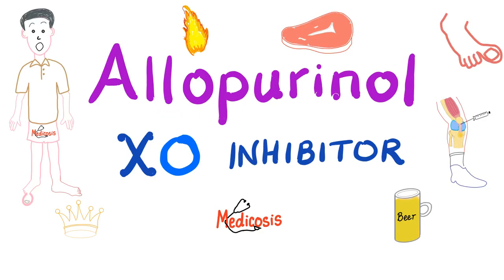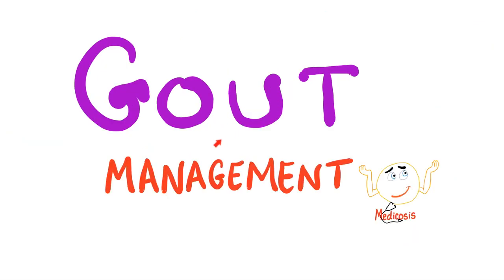It's Medicosis Perfectioneros, where medicine makes perfect sense, and today we'll talk about a xanthine oxidase inhibitor known as allopurinol. We have talked about the management of gout in the previous video, so please watch these videos in order. This is my rheumatology playlist.